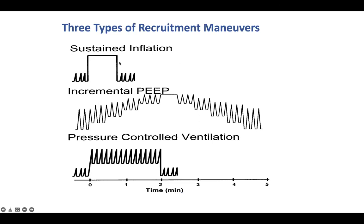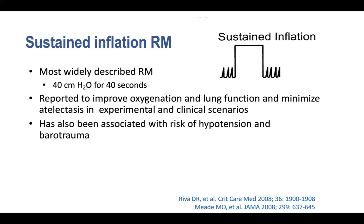There are three things we can discuss with lung recruitment maneuvers: a basic sigh, sustained inflation, and extended sigh maneuvers with stepwise PEEP. We're going to focus on sustained inflation and incremental or stepwise PEEP — and also pressure control inverse ratio ventilation as another form of ventilatory support that can open the lung.